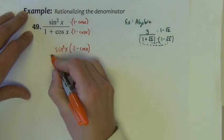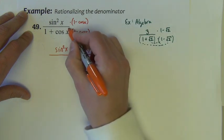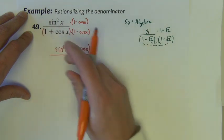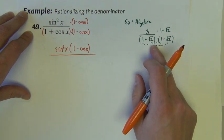In the denominator of this fraction, we have two binomials. So just like we would here, we're going to foil the denominator together.